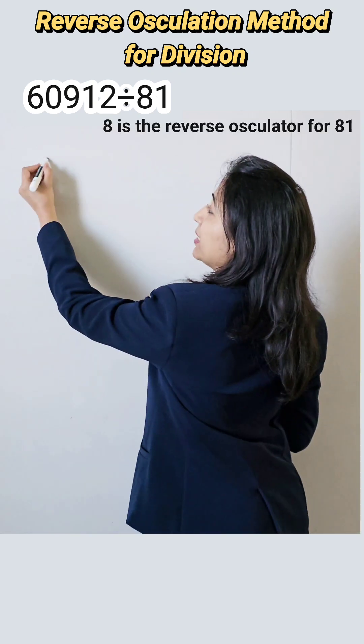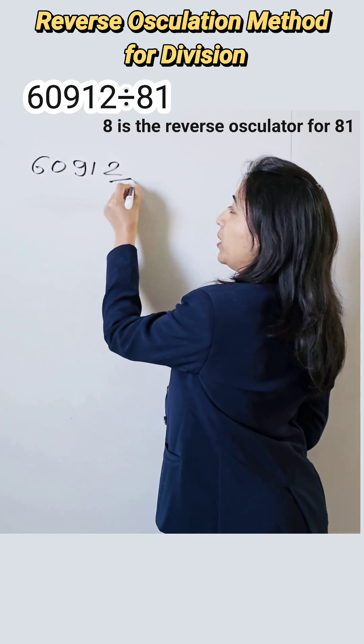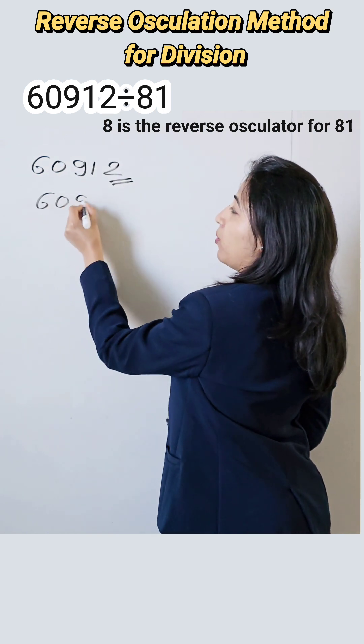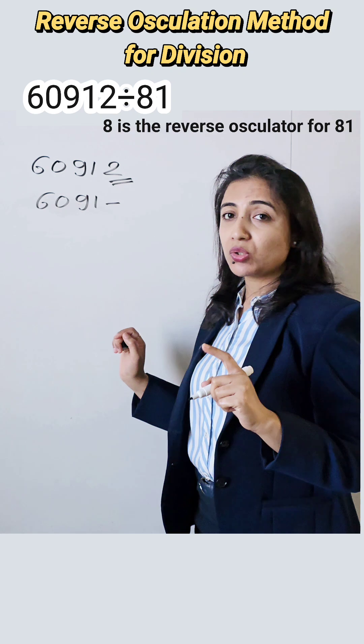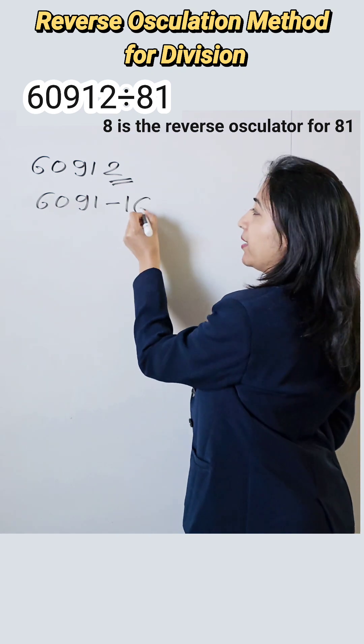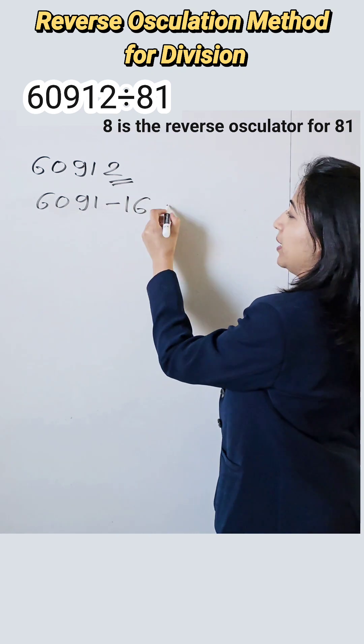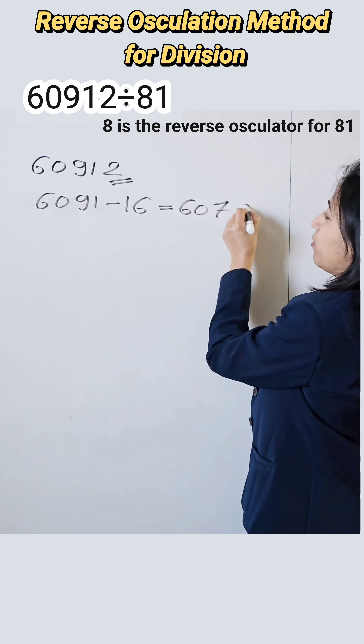So here our number is 60912. Now 2 is the last number. So take the product of 2 with the oscillator. So 8 is the oscillator. 8 into 2 is 16. Subtract this 16 from the remaining part of the number. So subtraction is 6075.